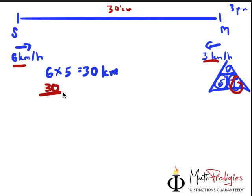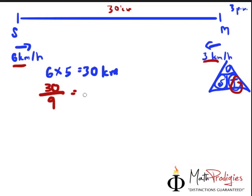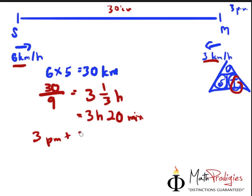Total distance is 30 km. Total speed is 6 plus 3, which gives you 9. 30 divided by 9 will give you 3 and 1 third hour, which gives you 3 hours and 20 minutes. Therefore the time would be 3pm plus 3 hour 20 minutes, which gives you 6:20pm.